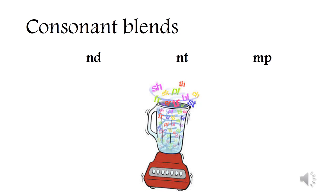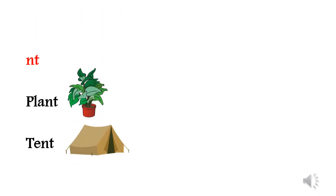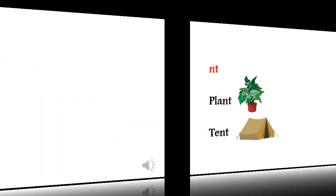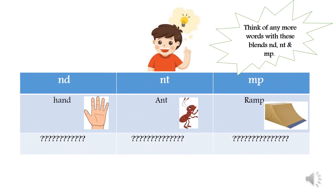These are blends usually found at the end of words. What sound do you think they make when they blend together? Let's take a look. ND — what sound does it make? Did you say /nd/? If so, you're right! ND like sand, pond. How about NT? NT says /nt/ like plant, tent. How about MP? Like lamp, camp. Great job!